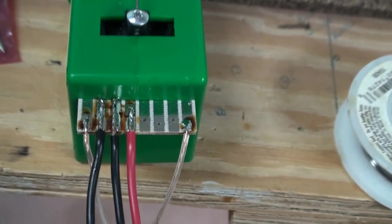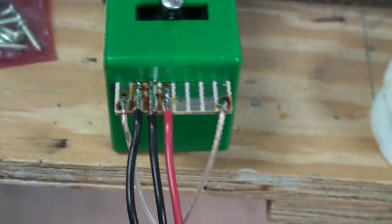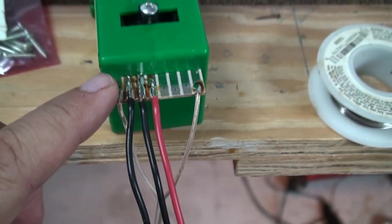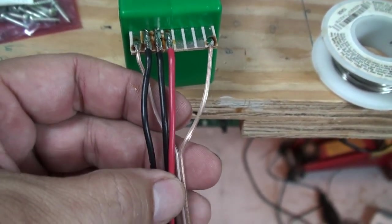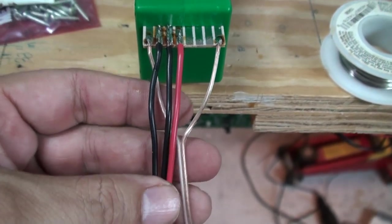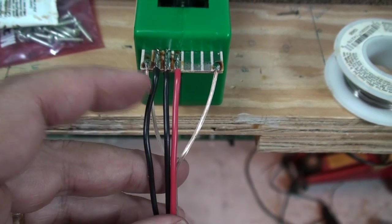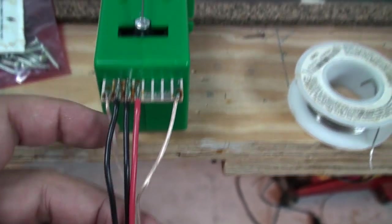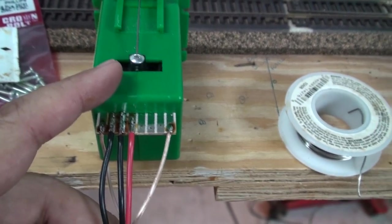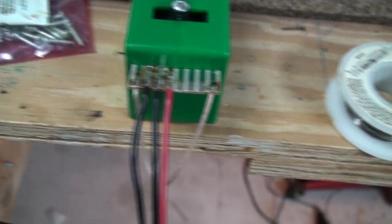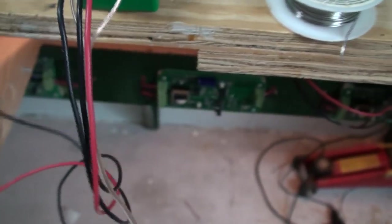All right, and here we have all the connections soldered to the tortoise switch machine. Remember the two outside wires which are lighter gauge than the three, the red and the two blacks, the two outside wires are the power to power the tortoise switch machine motor. It takes 12 volts AC or DC.